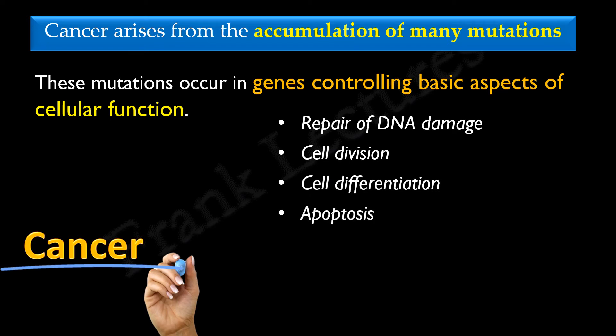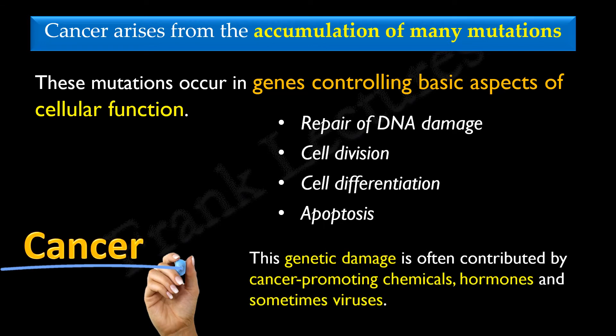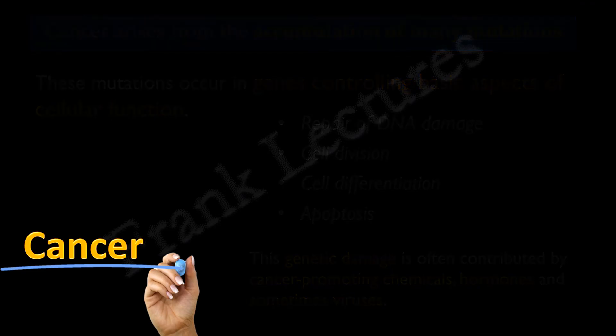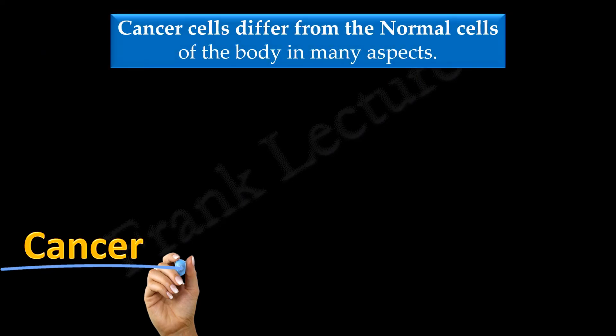So what we understand here is that all cases of cancer result from some kind of genetic damage. This genetic damage is often contributed by cancer-promoting chemicals, hormones, and sometimes viruses. We can also ask how this genetic damage is related to cancer. The cancer cells acquire some unique advantages over normal cells of the human body, and obviously these advantages are due to these genetic alterations.